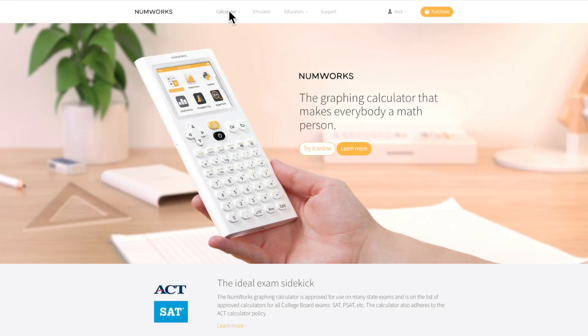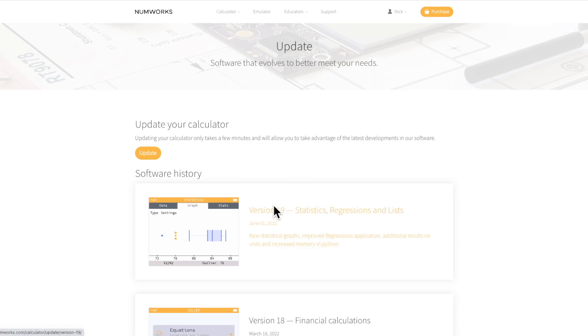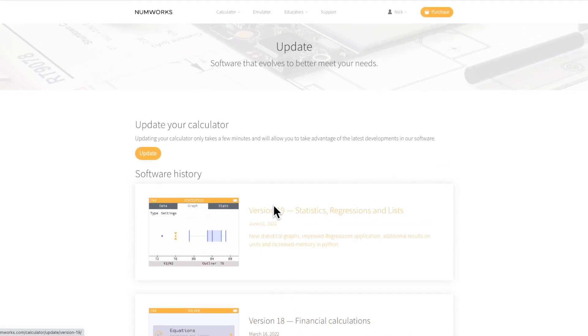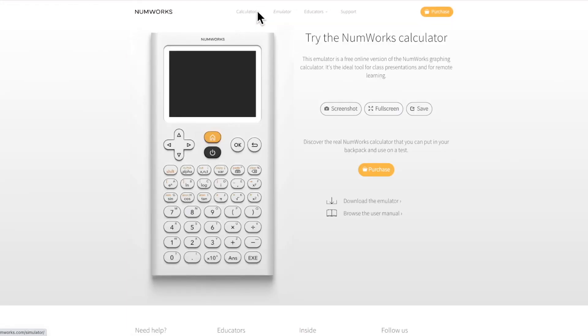To learn more about version 19, simply head to numworks.com. Under the calculator tab, you'll find an update page. Here you'll find all the information about version 19 and any other software versions from our history. You'll also have access to update your calculator and, of course, use our online emulator as well.